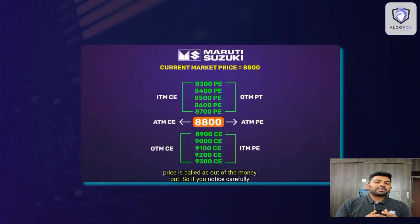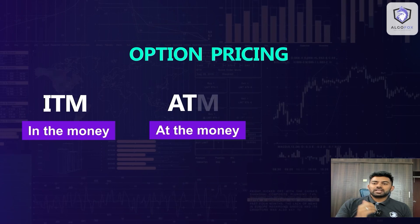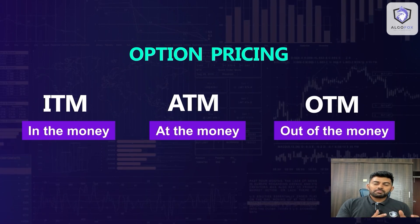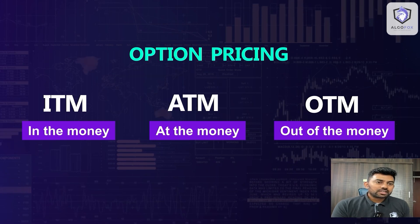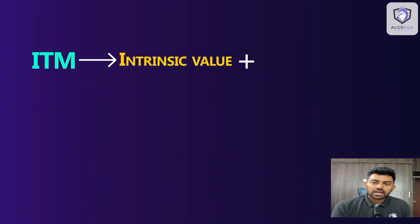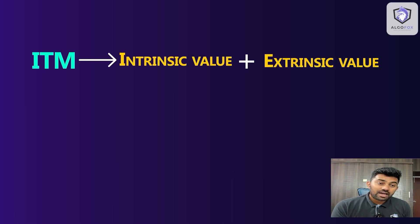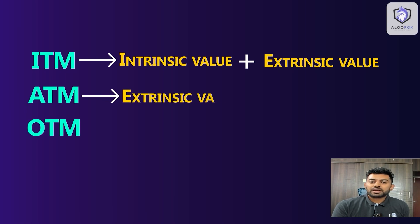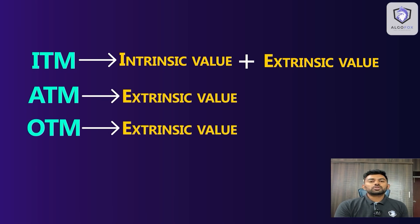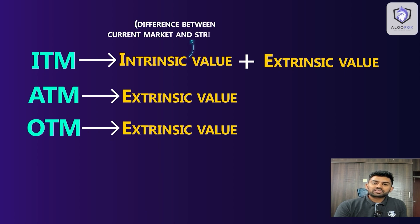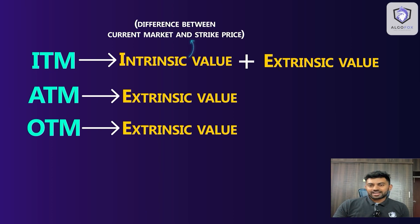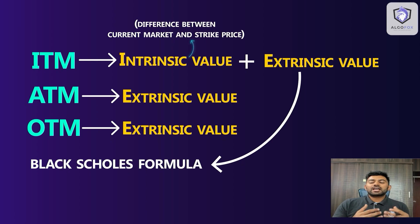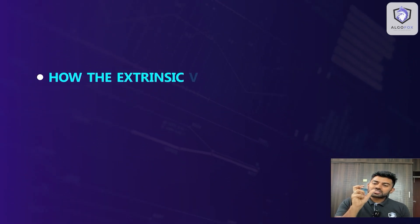In the basic class we have already discussed option pricing of in the money, at the money, and out of the money calls and puts. If you remember from our basics of option module, in the money is made up of intrinsic value and extrinsic value, whereas at the money and out of the money are made up of only extrinsic value. Intrinsic value is the difference between current market price and strike price. Extrinsic value is based upon a complex mathematical formula called the Black-Scholes formula. It is now time to understand how the extrinsic value is determined.